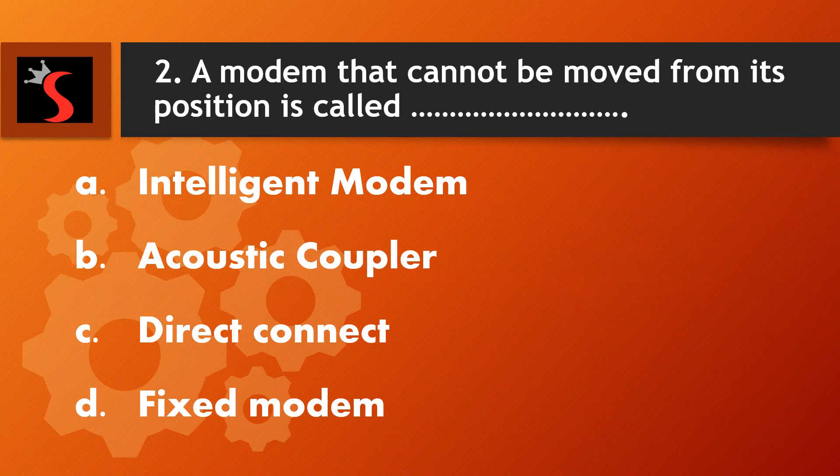The second question is: a modem that cannot be moved from its position is called? A. Intelligent modem, B. Acoustic coupler, C. Direct connector, D. Fixed modem.